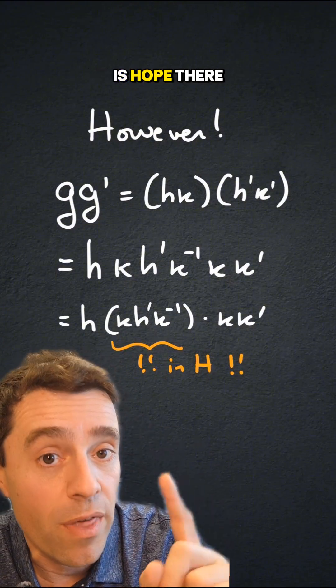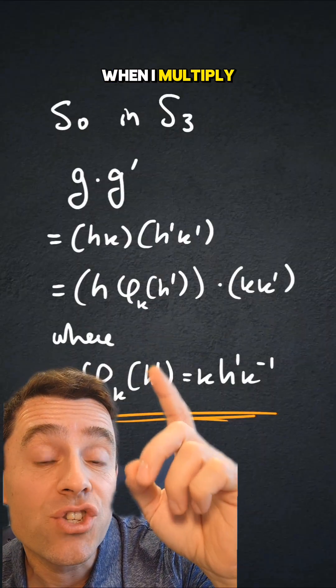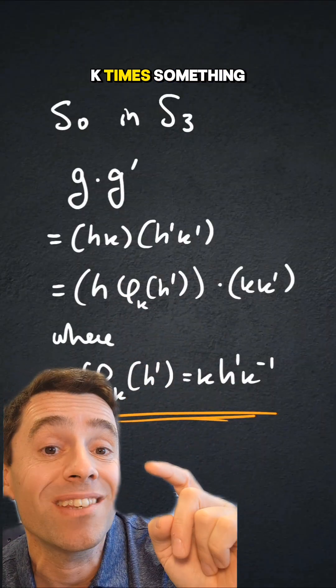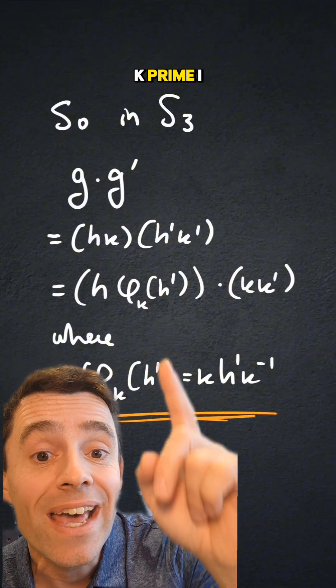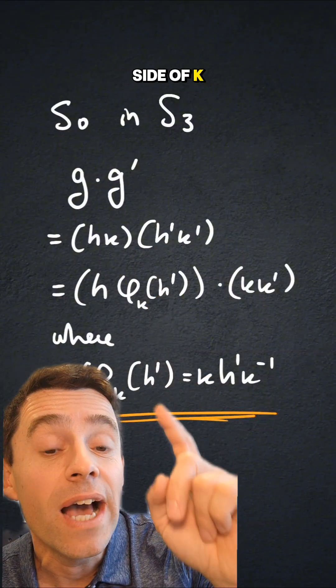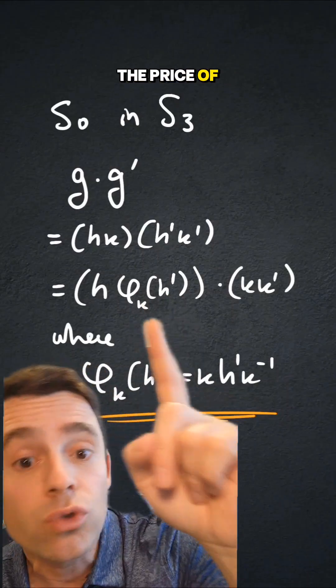So there is hope there. So rephrasing what I just said, in s3, when I multiply g and g', so when I multiply something of the form hk times something of the form h' k', I can't just move the h' to the other side of k, however,